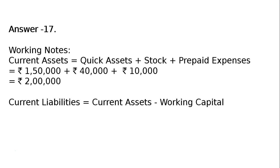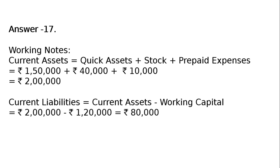Now, current liabilities is equal to current assets minus working capital. Here working capital is given Rs. 1,20,000 and current assets we have got Rs. 2,00,000. Hence current liabilities is equal to Rs. 2,00,000 minus Rs. 1,20,000, which is equal to Rs. 80,000. This is current liabilities.